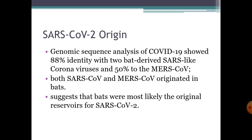Genome sequence analysis of COVID-19 showed 88% identity with two bat-derived SARS-like coronaviruses and 50% identity to MERS-coronavirus. Both SARS-coronavirus and MERS-coronavirus originated in bats. This suggests that bats were most likely the original reservoirs for SARS-coronavirus-2.